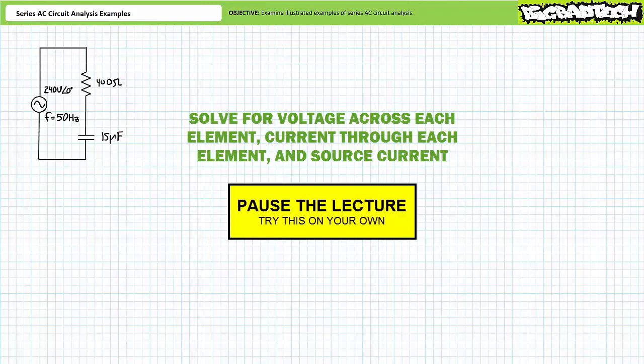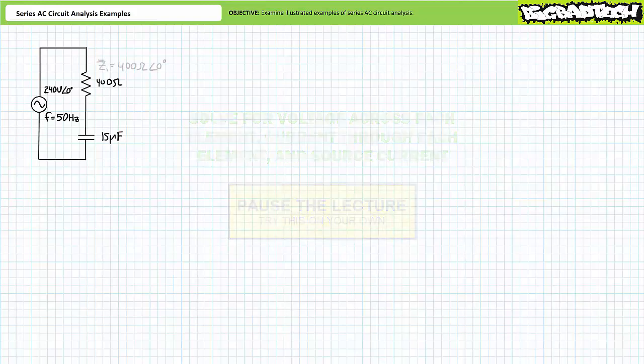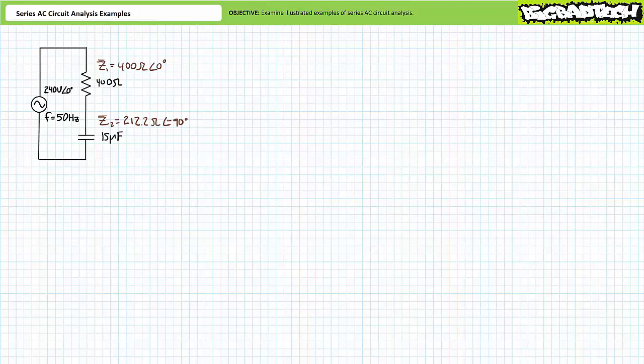If you're tracking, you should obtain the following results. The complex impedance of the 400 ohm resistor is 400 ohms at an angle of zero degrees — let's call this impedance Z1. The complex impedance of the 15 microfarad capacitor at an excitation frequency of 60 hertz is 212.2 ohms at an angle of negative 90 degrees — let's call this impedance Z2.